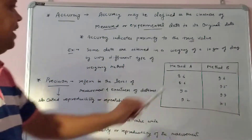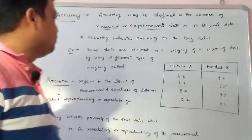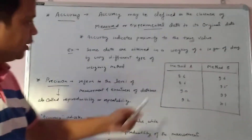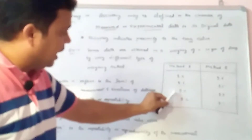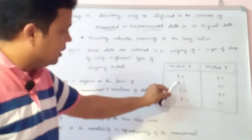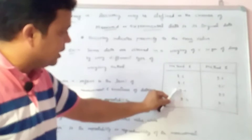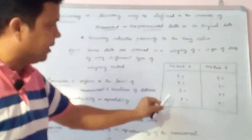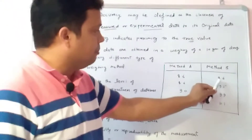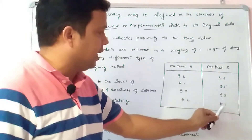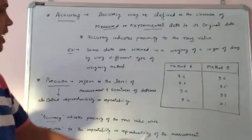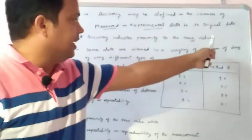I have a 10 grams compound. Through different methods I will weigh the same. Method A — I repeated it four times and got: 8.6, 8.6, 9, 9.2. Method B gave values of about 9.6, 9.5, 9.9, and 10.1. These are the weighings of 10 grams of the substance using two different methods.